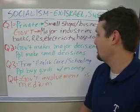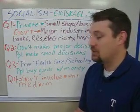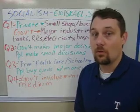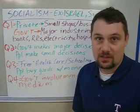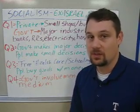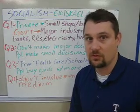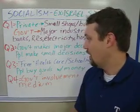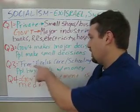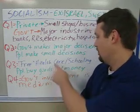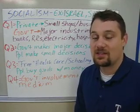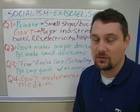Question two: how are goods produced? In a socialist system, the government makes the major economic decisions — like how much electricity to produce, where to drill for oil, or interest rates as far as banks go. But people can make small decisions like opening up a business, producing more shoes if those shoes are popular, or producing more clothes. Question three: how are goods distributed? In a socialist society you get free — quote unquote, because nothing is ever free — health care, schooling, and other services from the government. Tax money goes towards paying for those services.